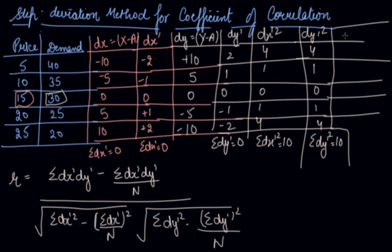Now dx' into dy' dash. Let's find out dx' dash into dy' dash. 2 into 2 is minus 4, minus 1, 0, minus 1, minus 4. We will get summation dx' dash and dy' dash as minus 10.